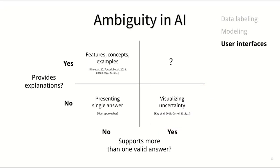When it comes to how AI communicates its output to the end user, the most basic approach is to simply show a single output without much explanation. Or we can leverage explainable AI techniques to present the reasons for the output that is produced in human-interpretable ways.